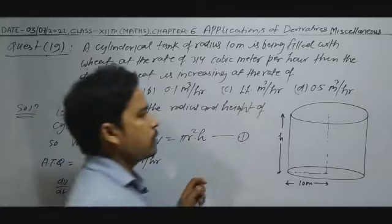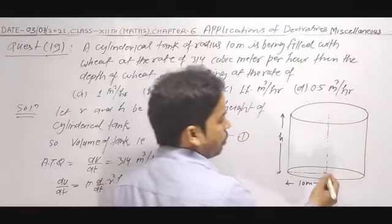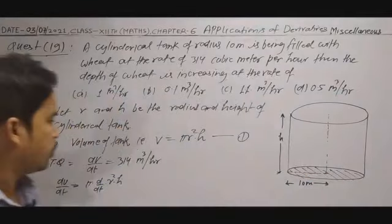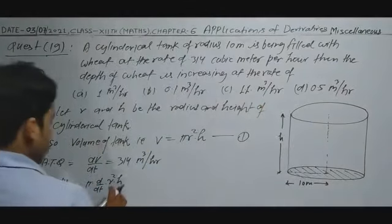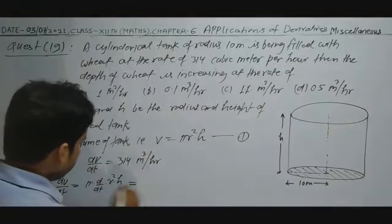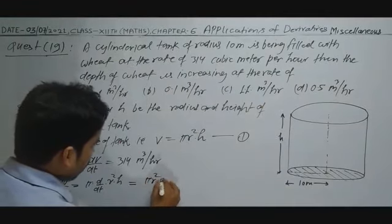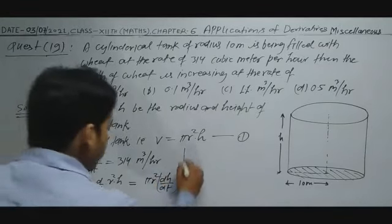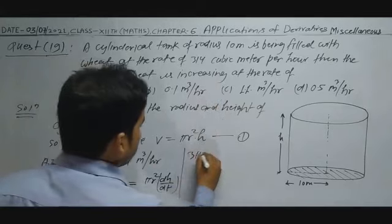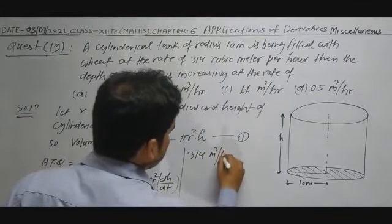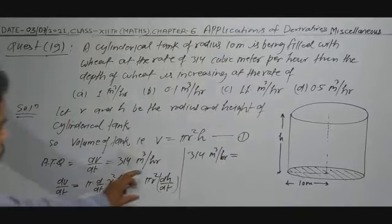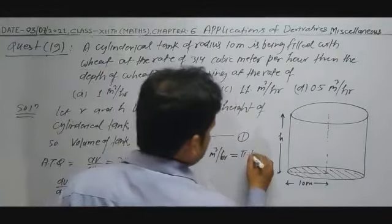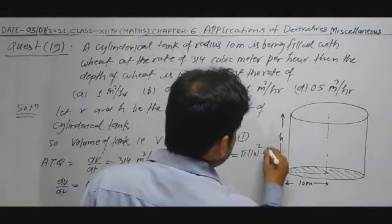Since the cylindrical tank is being filled with water, its radius cannot change — radius is fixed and height is increasing. So r² is constant. Therefore dV/dt = πr² × dh/dt. With dV/dt = 314 and radius r = 10 m: 314 = π × 10² × dh/dt.